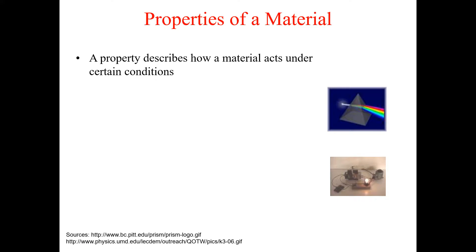The first topic of today's lecture is properties of a material. First of all, we will have a formal definition of the property — that is, what is meant by the property of a material. A property of a material basically describes how it acts under certain conditions. For example, you have a material and you put it at a particular condition: you want to heat it up, put light on it, or put it in a magnetic field. How it responds under those particular conditions we call the property of that material with respect to that particular environment.